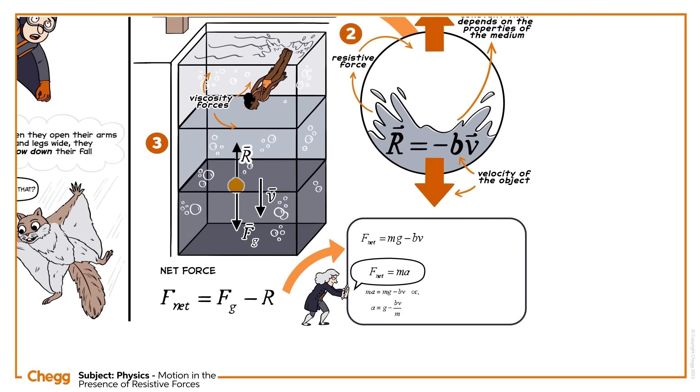As time increases, the magnitude of resistive force increases, and this causes a decrease in the net acceleration. Eventually, the pebble reaches a point where the net acceleration is zero. This is known as the terminal speed, which is equal to mass times the acceleration due to gravity divided by the viscosity constant. The pebble is still falling when it reaches terminal speed. It's not accelerating.